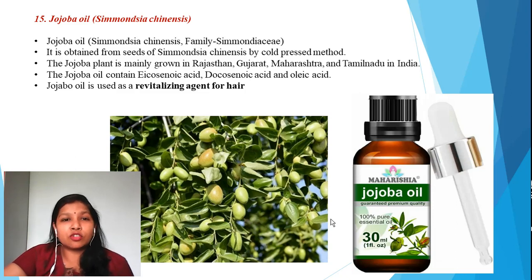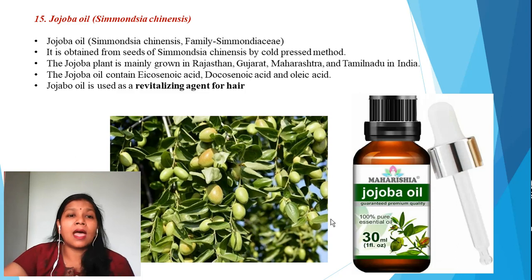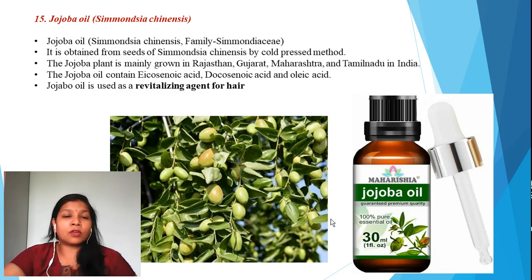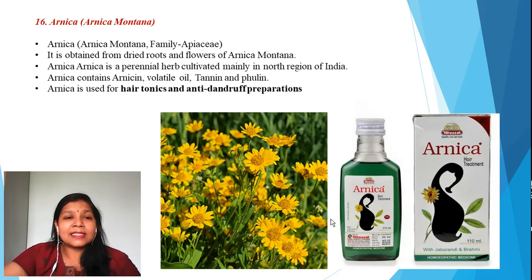The fifteenth ingredient is jojoba oil, extracted from the seeds of jojoba, belonging to the family Simmondsiaceae. The botanical name is Simmondsia chinensis. The oil is extracted by a cold press method. Jojoba plant is commercially cultivated in Rajasthan, Gujarat, Maharashtra, and Tamil Nadu. It contains eicosenoic acids, docosenoic acid, and oleic acid. This oil is used as a revitalizing agent for hair growth — it can be massaged on the scalp to promote hair growth.